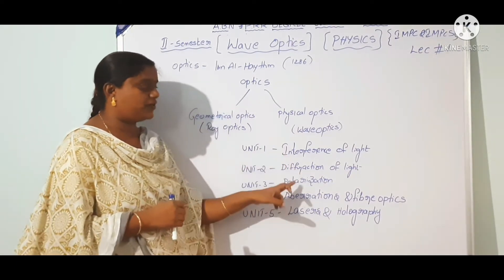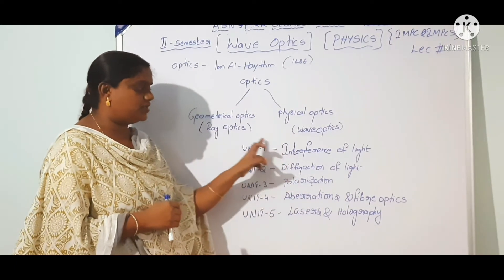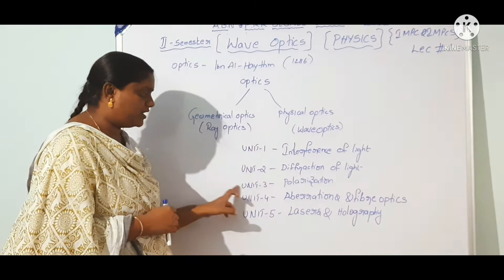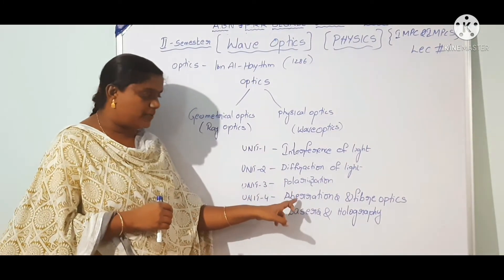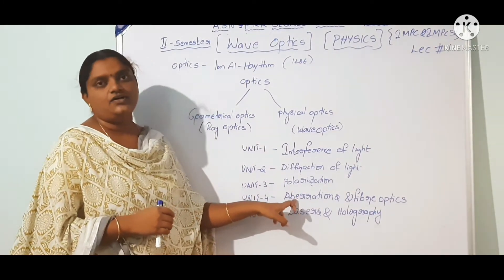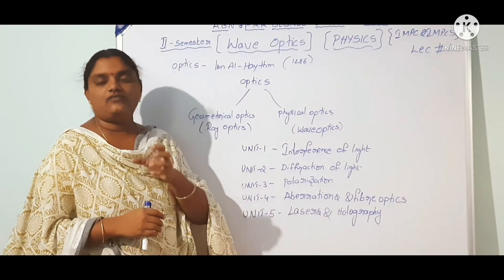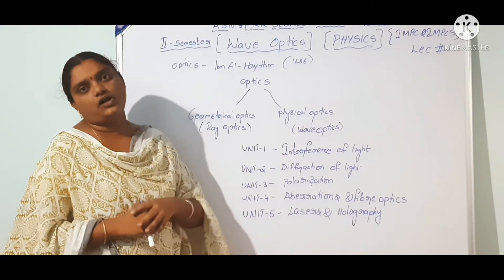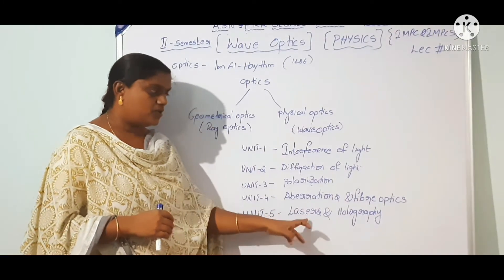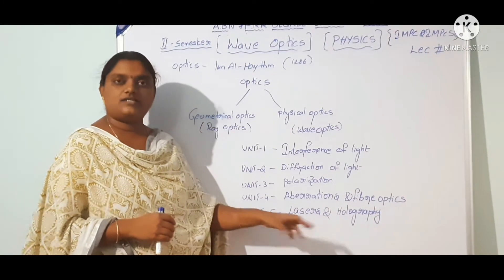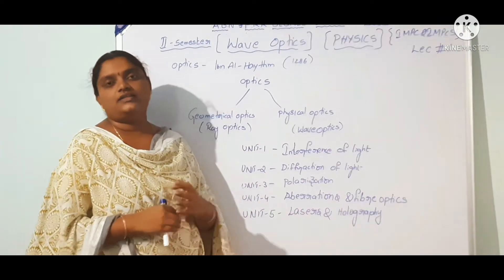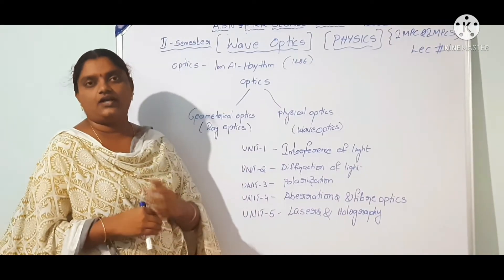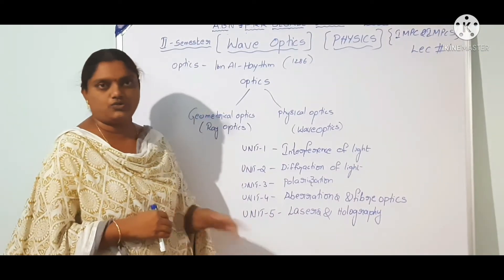Interference, diffraction, and polarization are properties of light. Aberrations on light will also be explained. Lasers are a monochromatic source of light. Holography is three-dimensional photography and is an advanced technology.